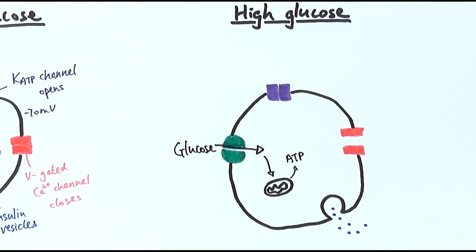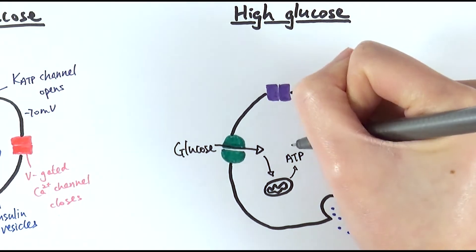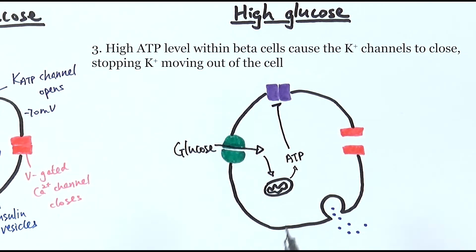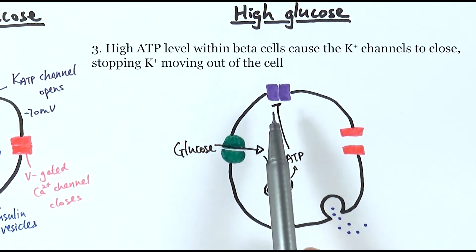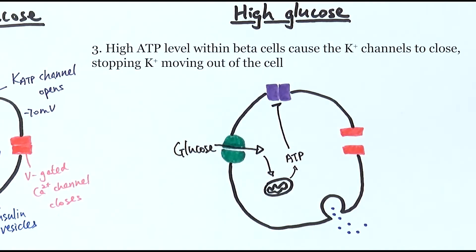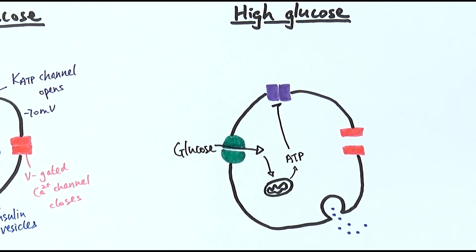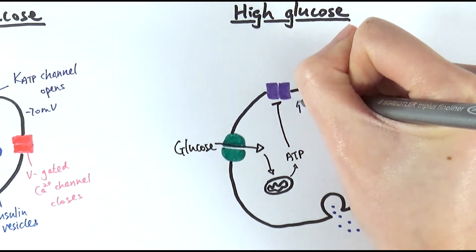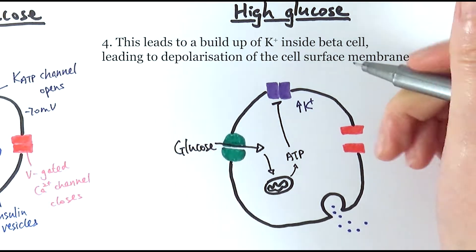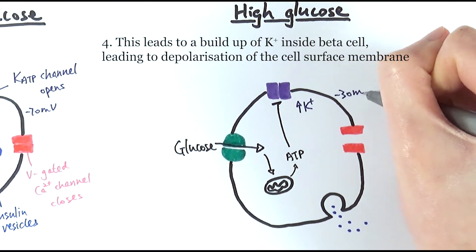The potassium ion channels are sensitive to the level of ATP inside the cell. A high level of ATP inhibits the opening of the potassium ion channels, causing them to close. If they close, the potassium ions cannot diffuse out of the cell anymore. Previously there was a low level of potassium ions inside because they kept moving out, but now there is a buildup of potassium ions inside the cell. This causes the membrane to depolarize from minus 70 millivolts to about minus 30 millivolts.